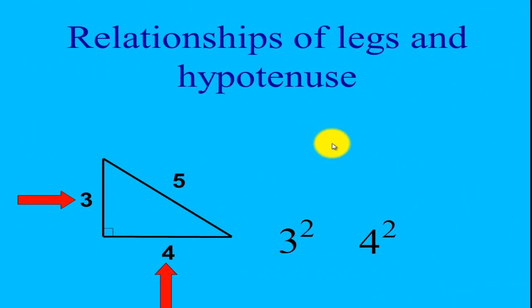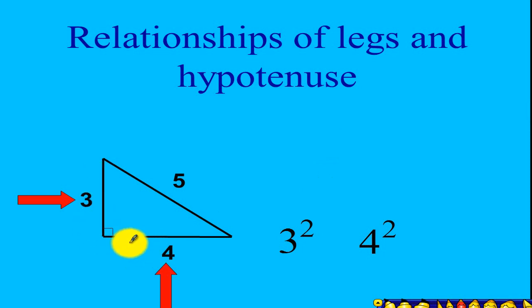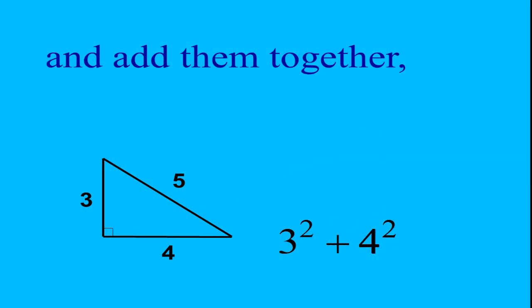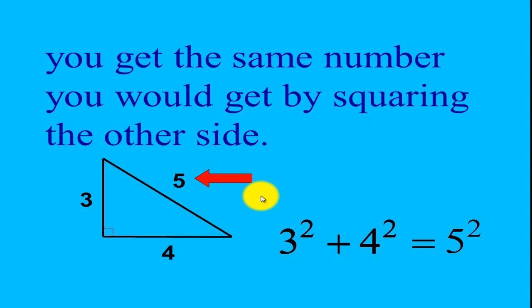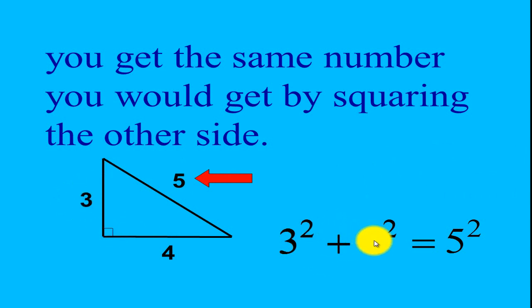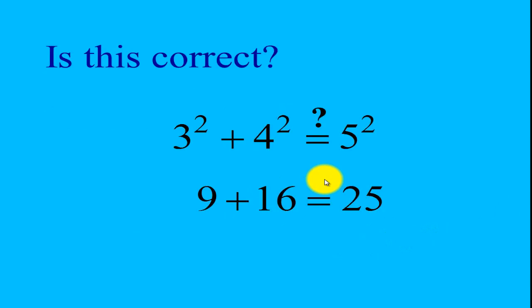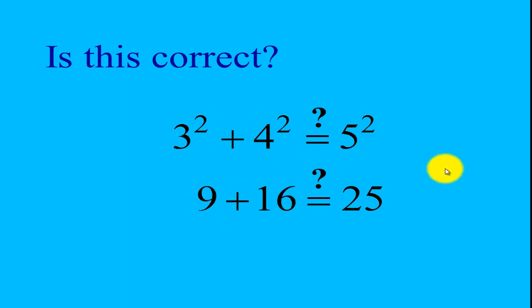Now, we have a relationship between the legs and the hypotenuse. If we are going to square the measurements of the legs — so 3 squared and 4 squared — and add them together, you will get the same number when you square the hypotenuse. So 3 squared plus 4 squared equals the square of the hypotenuse. Let's check: 3 squared is 9, 4 squared is 16, add these two up and it equals 25, which is equal to 5 squared. And it is true for any right triangle.